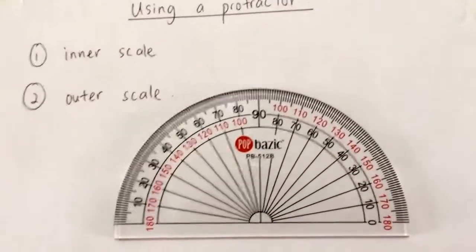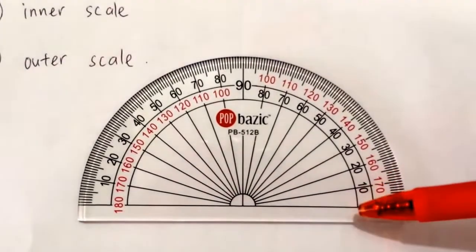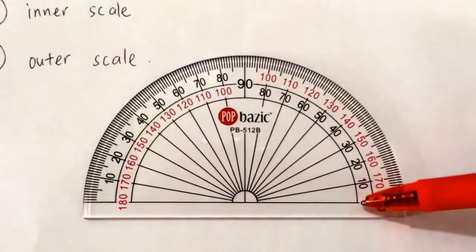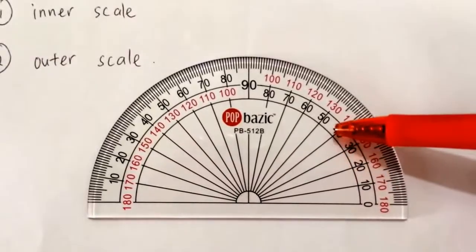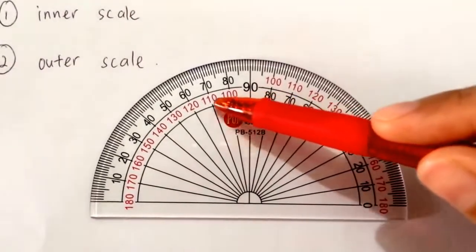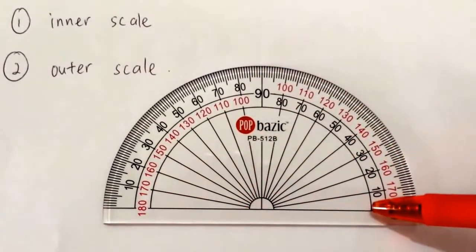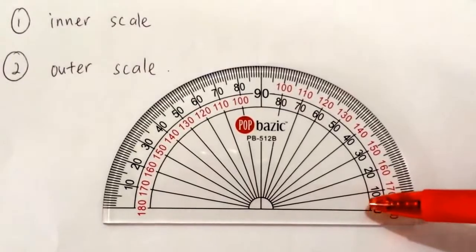Now the inner scale. The numbers on the inner scale begin here: 0, 10, 20, 30, 40, 50, 60, and it goes on until 180. This means that for the inner scale, zero starts on the right-hand side.